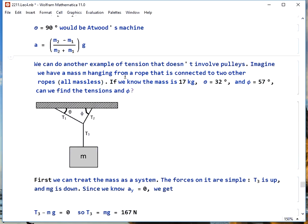Finally, we can do another example of tension where we don't have any pulleys involved. Let's say we have a mass m hanging from three different ropes that are, of course, all massless. Mass m is 17 kilograms. We know the angle that these two ropes, 1 and 2, make with the ceiling. The angles are 32 degrees and 57 degrees. We want to see if we can find all the tensions.